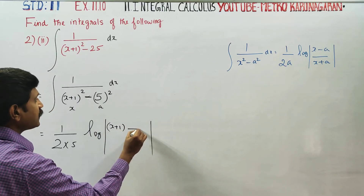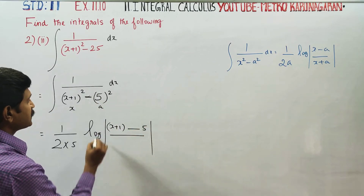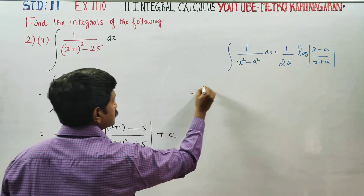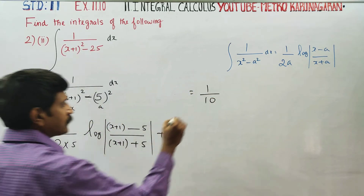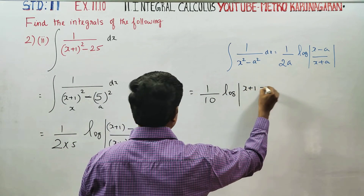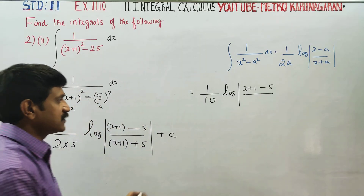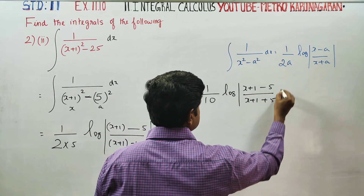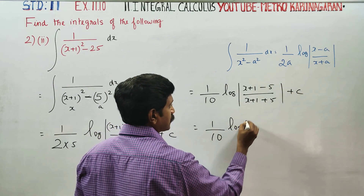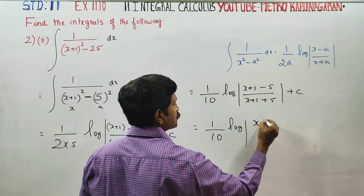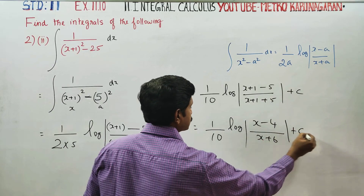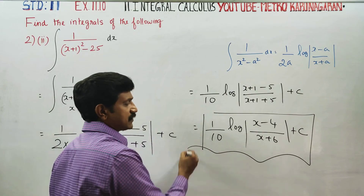x minus a, where a is 5. x plus a, which is x plus 1 plus 5, plus c. So 2 into 5 gives us 10. Logarithm of modulus of bracket: (x plus 1 minus 5) by (x plus 1 plus 5), plus c. This simplifies to 1 by 10, logarithm of (x minus 4) by (x plus 6), plus c. This is the final answer for this problem.